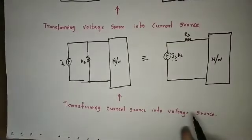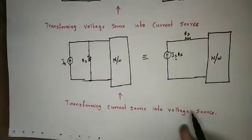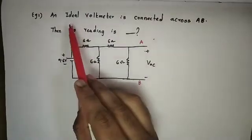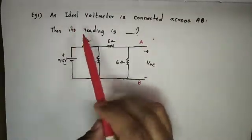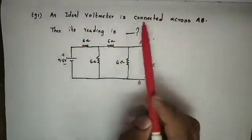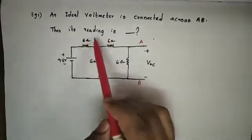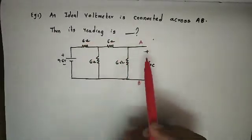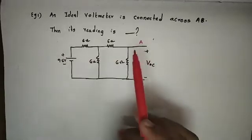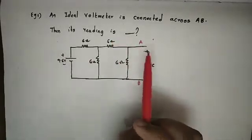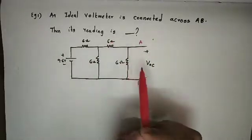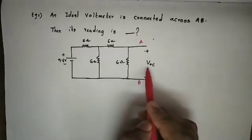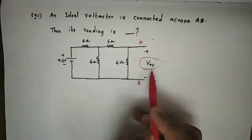Now let's take an example to get a better understanding of this topic. An ideal voltmeter is connected across AB. What is its reading? Since this is a network with terminals A and B, and an ideal voltmeter is connected across AB, the reading is the open circuit voltage.